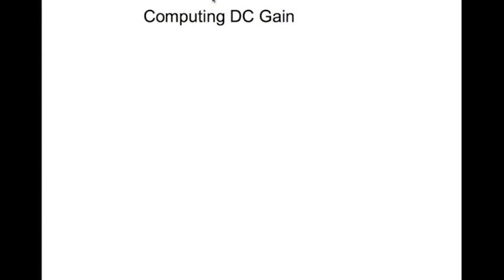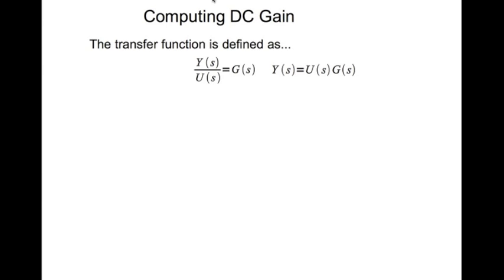Now let's look at computing DC gain of a system. The transfer function of the system is defined by the output divided by input in the Laplace domain. So y(s) divided by u(s) which is equal to g(s) — this is the transfer function. You can write y(s) equals u(s) times g(s).